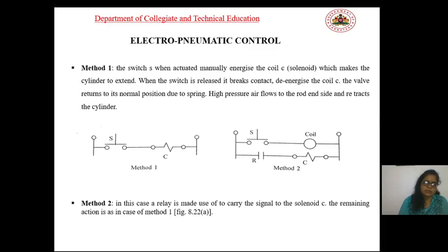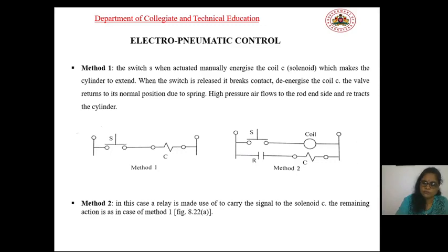High-pressure air flows to the rod side of the cylinder and retracts it. When it comes to Method 2, as observed from Figure 2, a relay is used to carry the signal to the solenoid C. The remaining action is the same as in Method 1.